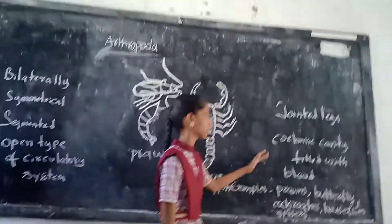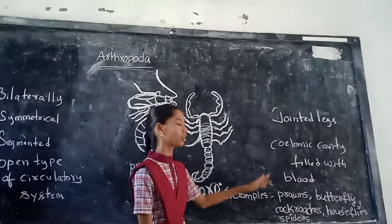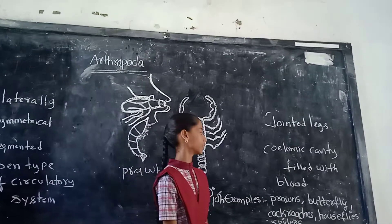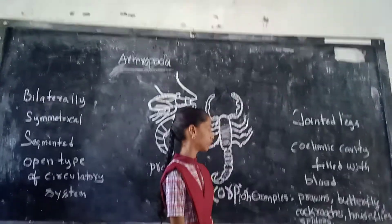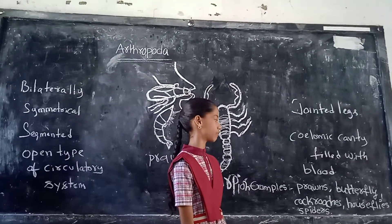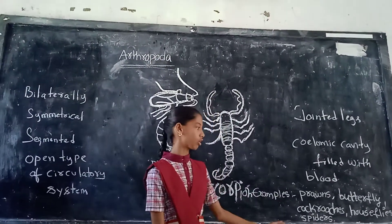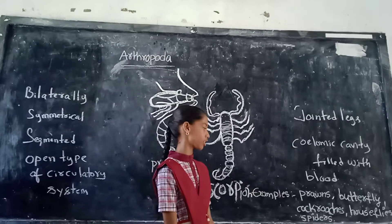Haemocoel cavity filled with blood. Examples: Prawn, Butterfly, Cockroach, Housefly, Spider.